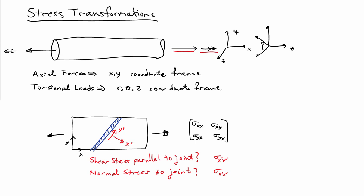So we'd be thinking about the question of normal stresses to the joint — figuring out what sigma X prime X prime is — or if we want to know the shear stress, what sigma X prime Y prime is. This is another case where we'd like to transform the stresses known in one coordinate frame and determine them in another coordinate frame. Here we're not adding two different analyses together like we were with the round bar, but it's another example of where stress transformations are an important concept.